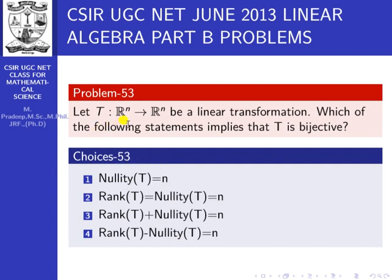Let T from R^n to R^n be a linear transformation. Which of the following statements implies that T is bijective? T is bijective means T is one-to-one and onto. The options are: first, nullity of T equal to n; second, rank of T equal to nullity of T equal to n; third, rank of T plus nullity of T equal to n; fourth, rank of T minus nullity of T equal to n.